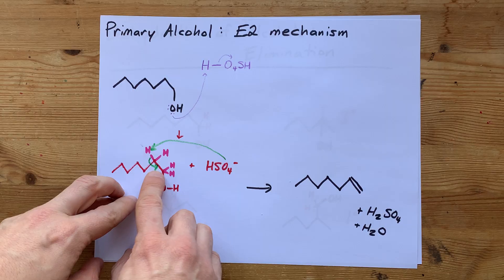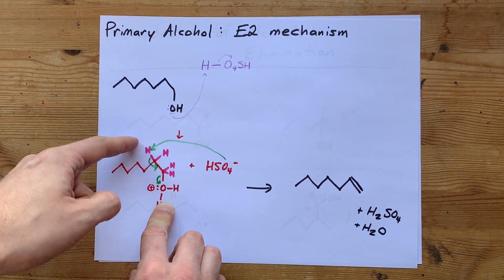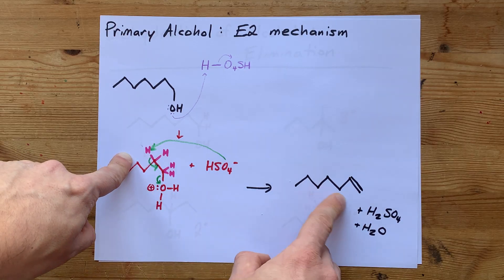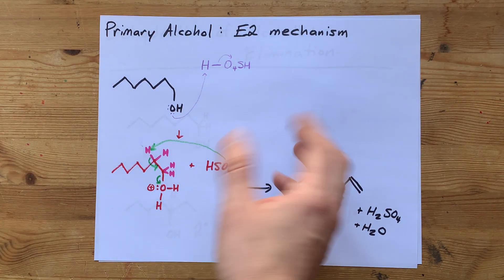But the point is that you're protonating the OH to make it an OH2 group. Super easy to leave. As long as you pluck a hydrogen off of the next carbon in the chain, the electrons flow around to create that double bond. It's beautiful.